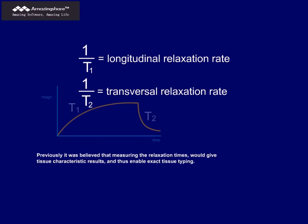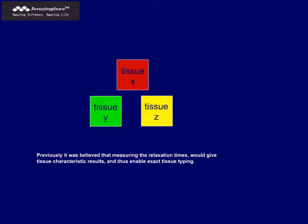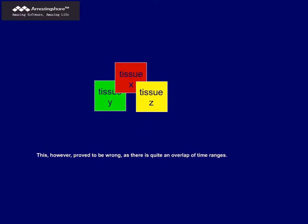Previously, it was believed that measuring the relaxation times would give tissue characteristic results, and thus enable exact tissue typing. This, however, proved to be wrong, as there is quite an overlap of time ranges.